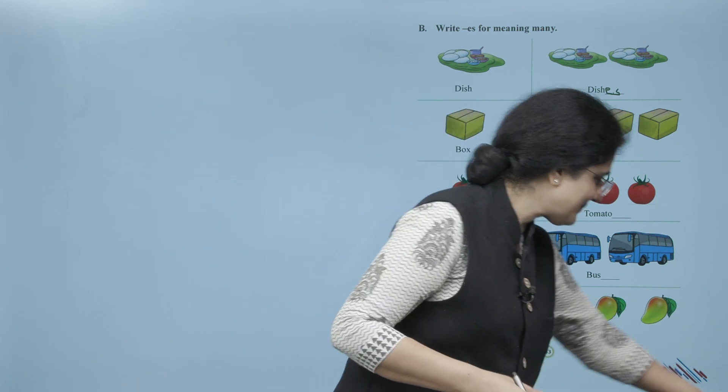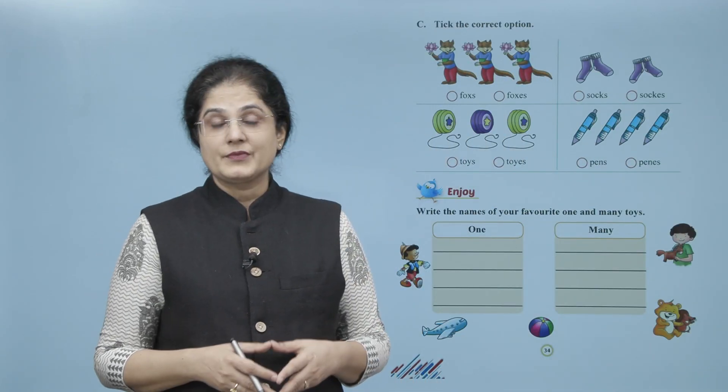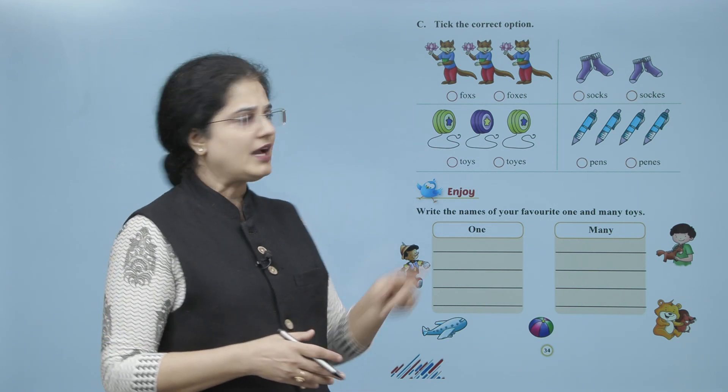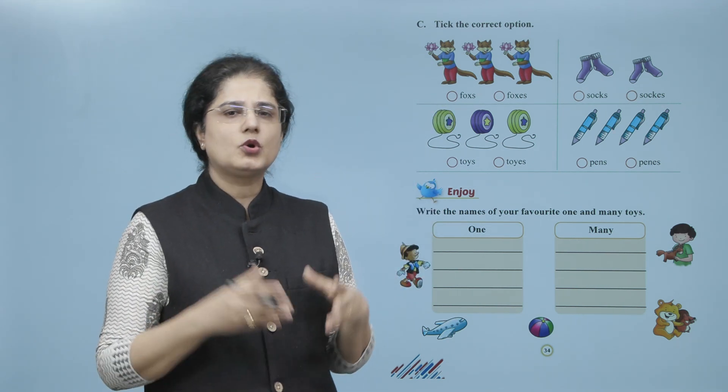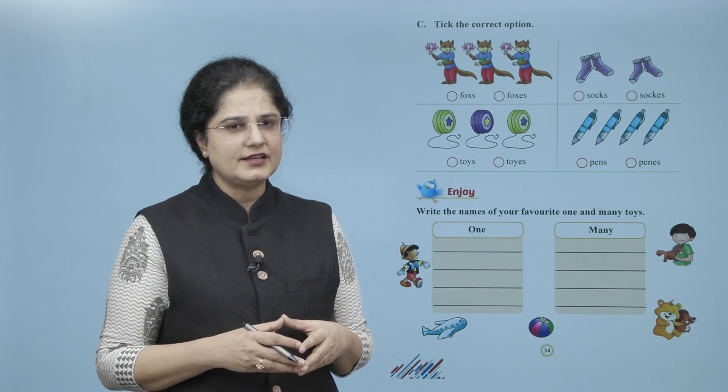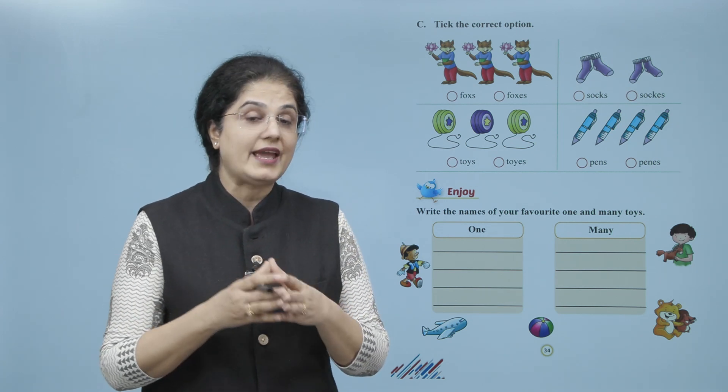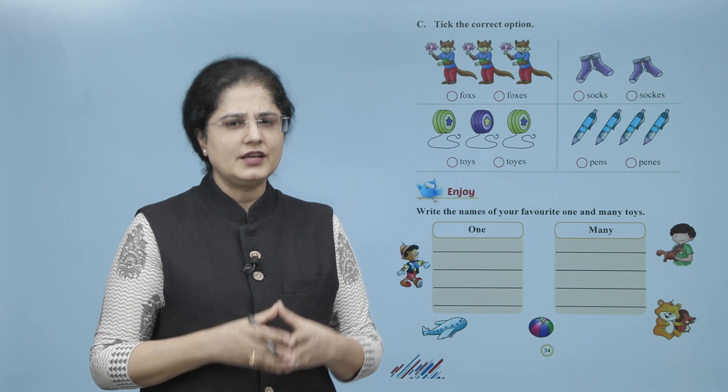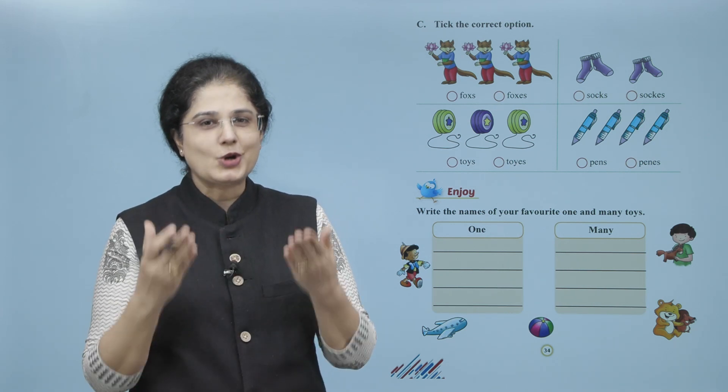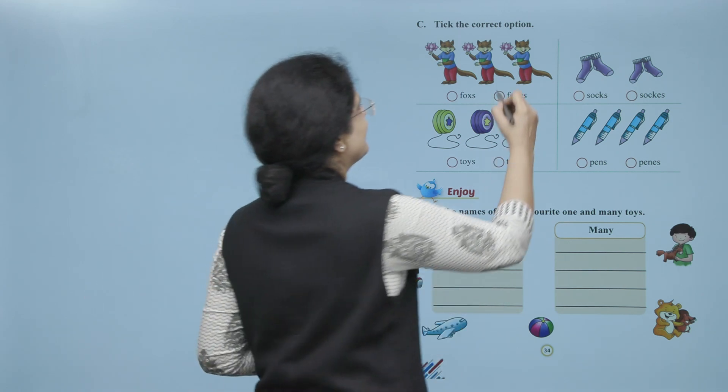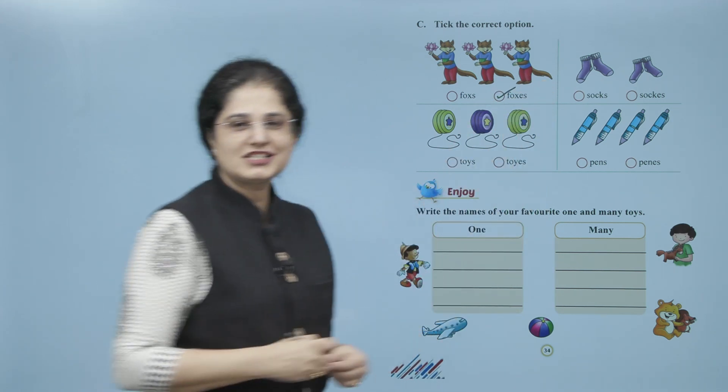Now tick the correct option. Ab yahaan pe kya hai? Many foxes diye hai. To kaun sa spelling yahaan pe sahi hai? F-O-X-S ya F-O-X-E-S? Kaun sa sahi hai? Foxes, doosre wala sahi spelling wala word hai. Us ko tick karenge.